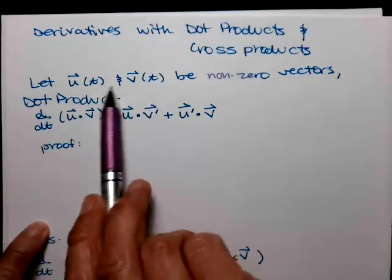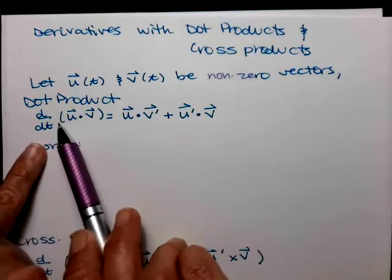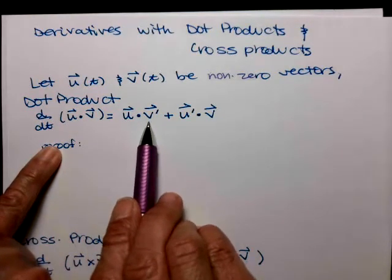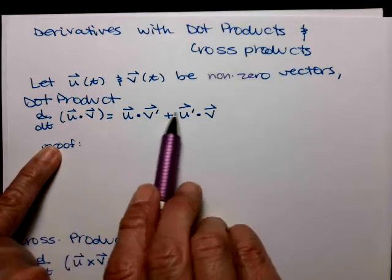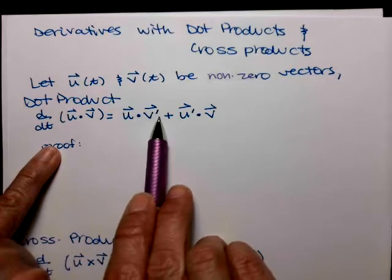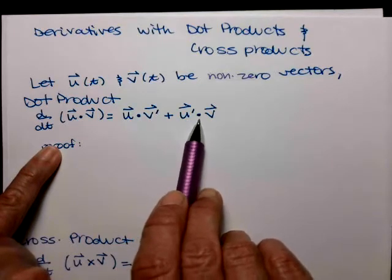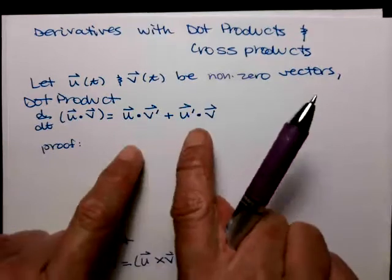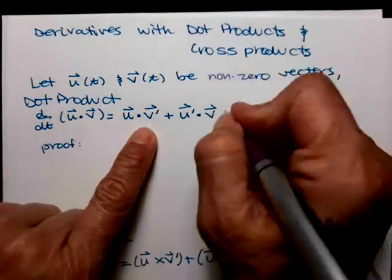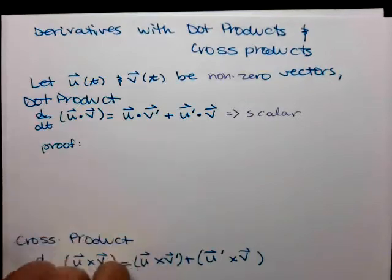Let's let u and v be our non-zero vectors. For the dot product, the derivative of u dot v is equal to u dot v prime plus u prime dot v. This is very much like our product rule before — first times the derivative of the second, where the 'times' is the dot product, plus the derivative of the first times the second, again with the dot product. We have two dot products adding together, and dot products lead to scalars, so this is going to be a scalar value.